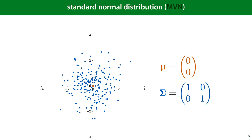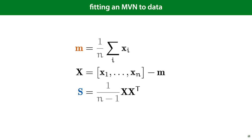The standard multivariate normal distribution has its mean at the origin and the identity matrix as its covariance matrix — that is, its features are uncorrelated and the variance is 1 along every dimension. If we have some data and want to fit a multivariate normal distribution to it, we need to find the mean and the covariance matrix that fit best. Computing these values looks like this: the mean is the sum of all data vectors divided by the number of vectors.